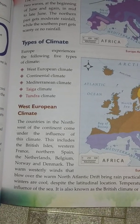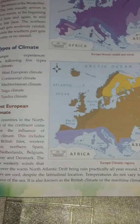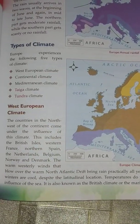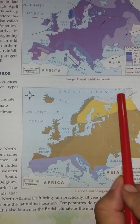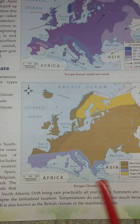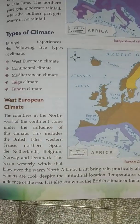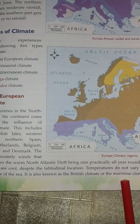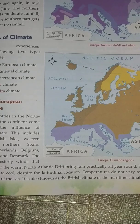Though it lies in the temperate belt, the summers are warm and winters are cool. Temperatures do not vary too much because of the influence of the sea - this portion is very close to the water bodies. It is also known as the British climate or the maritime climate because these areas come under the influence of the water bodies.